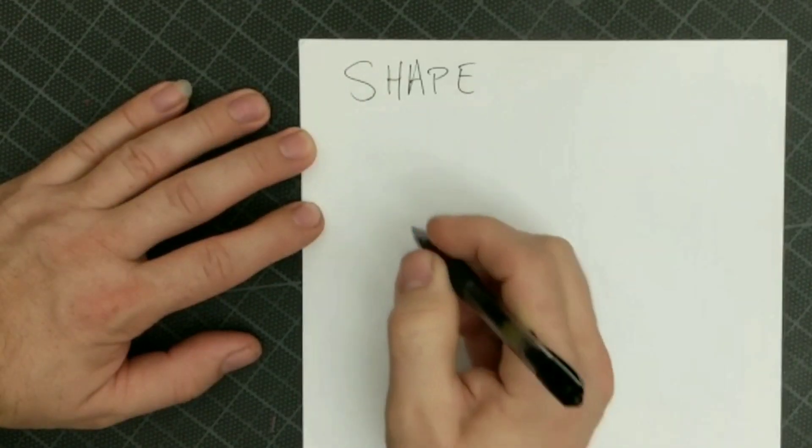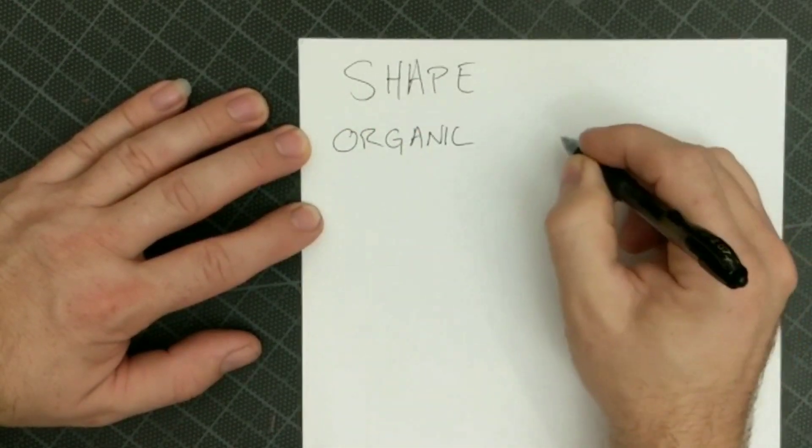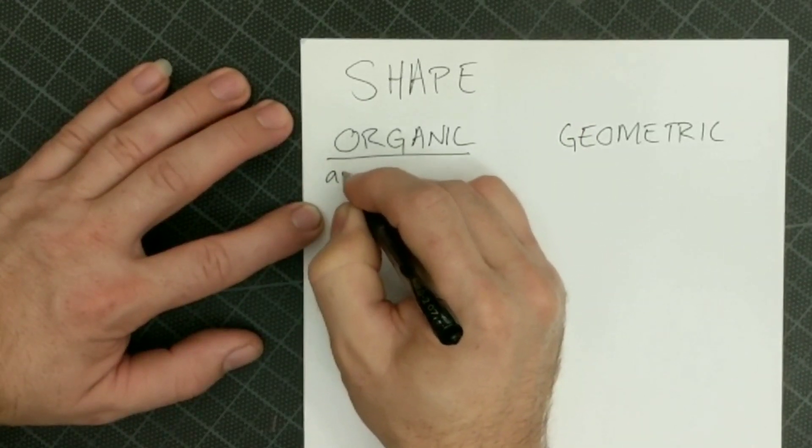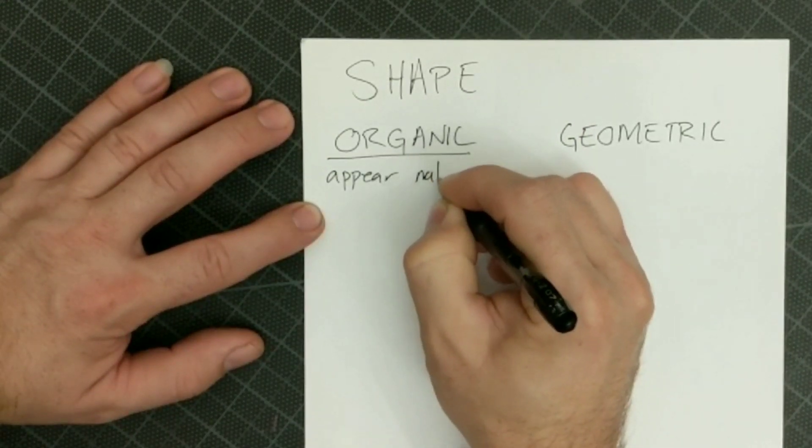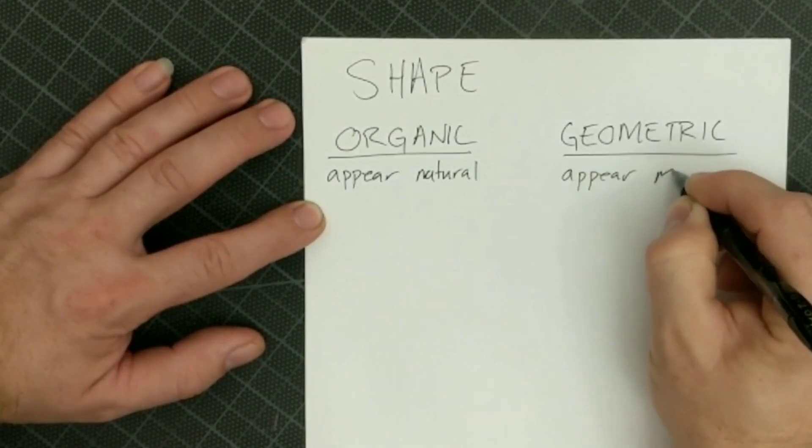We're going to talk about shape, specifically organic and geometric. Organic are shapes that appear natural and geometric shapes appear man-made.